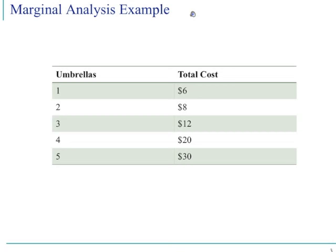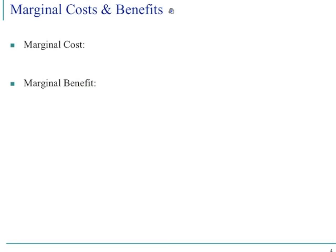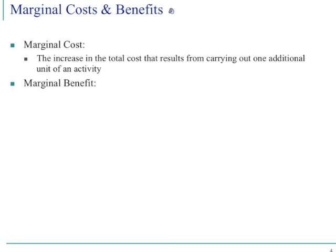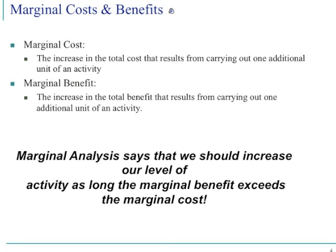So before you decide to produce another umbrella — say a sixth one — ask what the marginal cost would be. Marginal cost is the additional cost to produce an additional unit of output or additional unit of an activity. On the other hand, marginal benefit is the additional benefit you get from an additional unit of activity.